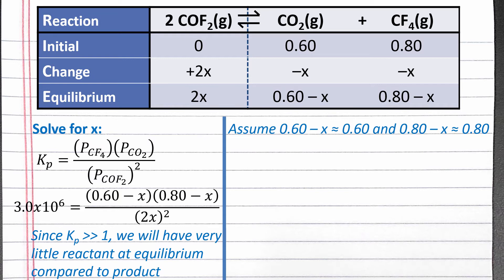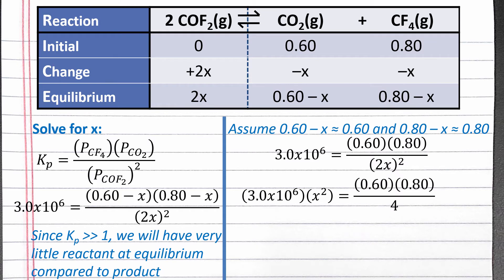If we plug these simplifying assumptions into our Kp expression, we will be able to solve for x without using the quadratic formula. First, we can square 2x, which is in parentheses, so both the 2 and the x are squared, to get 4x squared. We can multiply both sides of the equation by x squared.